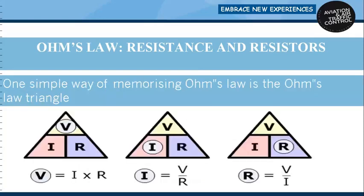One simple way of memorizing Ohm's Law is the Ohm's Law magic triangle. If voltage is asked and current and resistance are given, cover V at the top, leaving I and R, so voltage equals current multiplied by resistance. Where voltage and current are given, cover R in the triangle, leaving V and I, so resistance equals voltage divided by current.